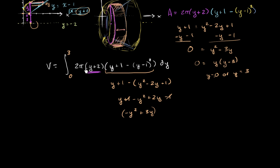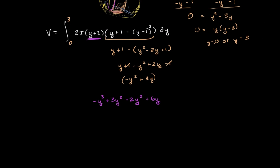So when you multiply y plus 2 times this, you have y times negative y squared gets us negative y to the third power. y times 3y is going to be plus 3y squared. 2 times negative y squared is negative 2y squared. And then 2 times 3y is plus 6y.